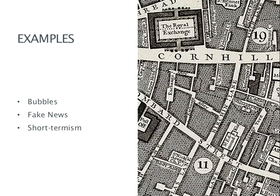Also, economic man was difficult to square with ideas around altruism and self-sacrifice, and there are points where clearly economic theories based around economic man do not work. It was very difficult, for example, to believe in such a creature as economic man when you start to see financial stock market bubbles appearing — people herding into certain stocks, buying too many of them, pushing up prices to highly unrealistic levels. How can that happen if people are totally rational? We can also think about why people believe in fake news and what it is about that so-called news that attracts them instead of scientific evidence. And we all know of instances of short-termism — anyone who has started an exercise plan, a diet plan, or even a study plan and given up halfway through will know what I mean.